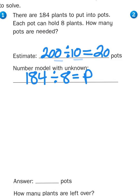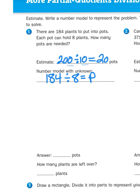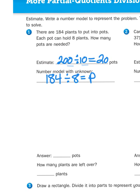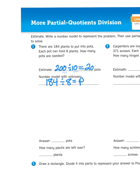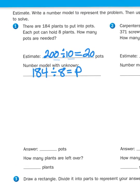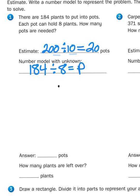So now I'm going to do the actual computation to figure out how close my estimate really is. Now I wrote my number model as a number sentence but when I actually go to solve it I'm going to write my problem in an algorithm. I'm going to put that dividend in its house and put the divisor outside knocking on the door.